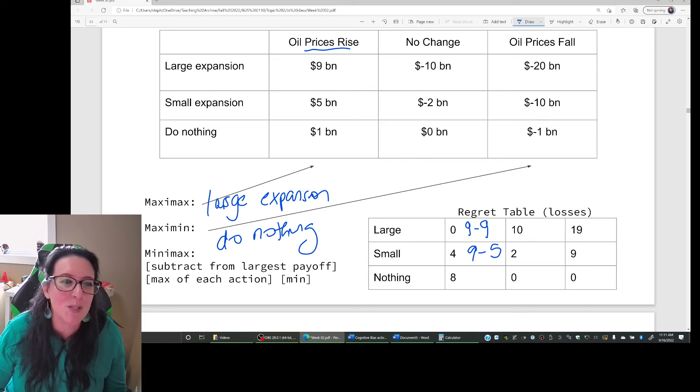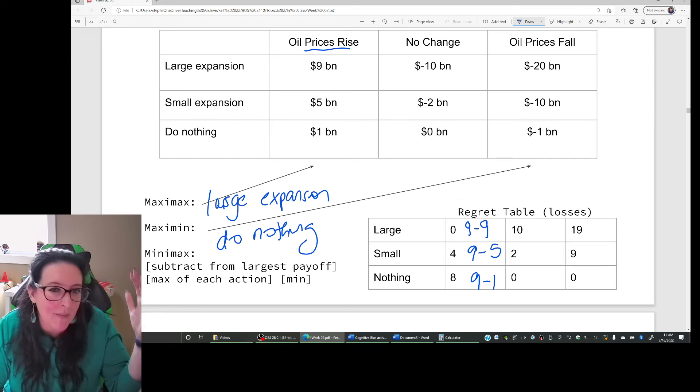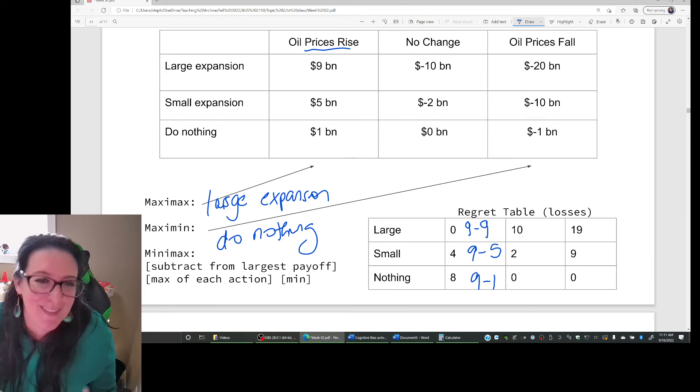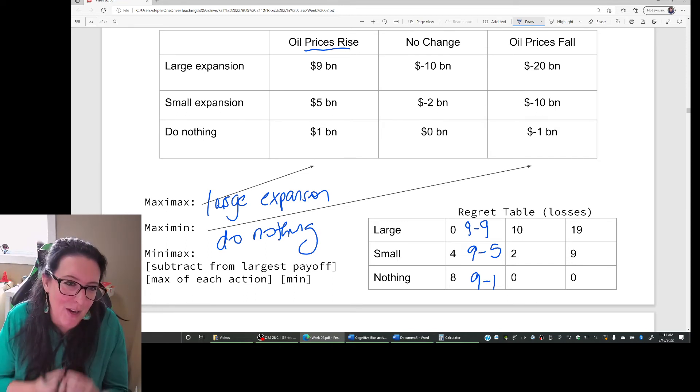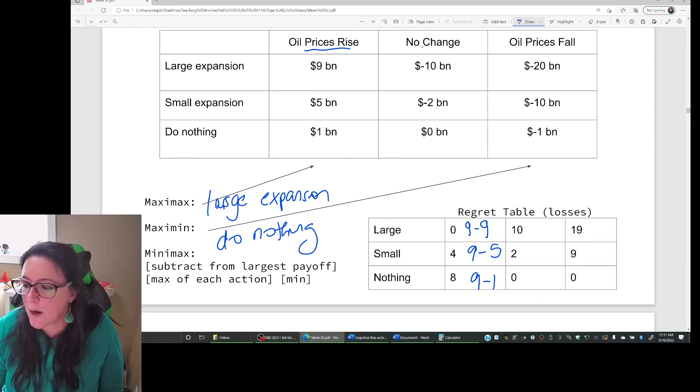If oil prices rise, we could have made $9 billion. If we did nothing, we get $1 billion. And so the regret here is $8 billion. So we're creating this regret table to show what we gave up. If there is that particular outcome, if oil prices rise, which decision we make, which one's going to have the most regret. So if we chose the best option, there's no regret. And then we can look at the difference.